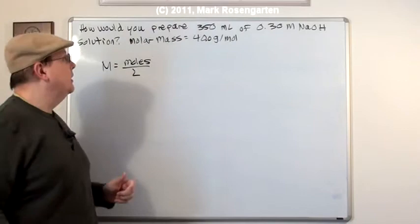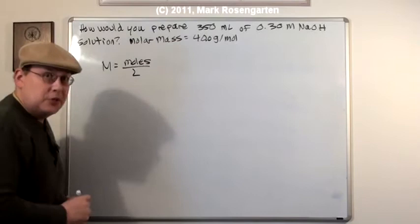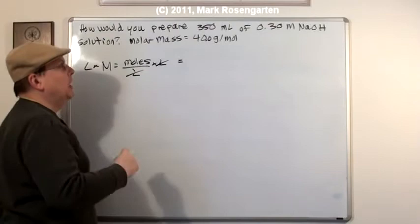40.0 grams per mole. Well, it includes moles. So we can use this to convert moles into grams. So we need to solve for moles to figure this problem out. Multiply both sides by liters. And then plug in the numbers.